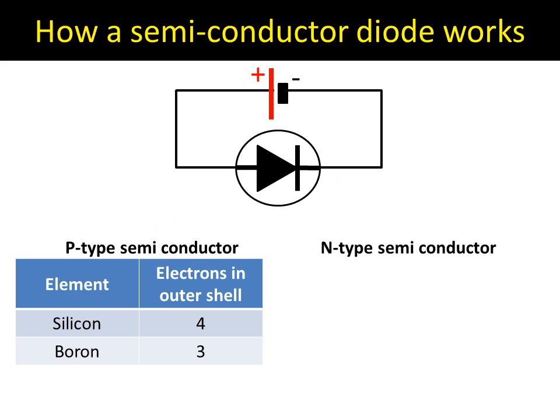The diode is made of silicon mainly, but the p-type has had boron added to it. This sounds a bit like chemistry, but it's all to do with electrons in the outer shell. Silicon has four electrons in its outer shell and boron has three. Atoms want eight electrons in their outer shell, but silicon sharing boron's electrons gives a total of seven — so the p-type side wants one more electron to make a full shell of eight.